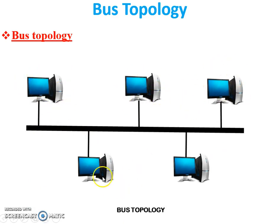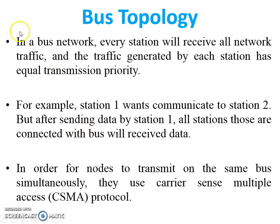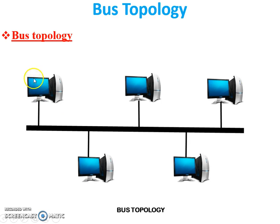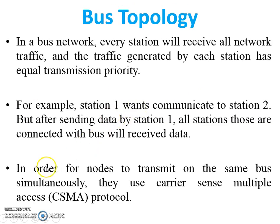Here you can see the structure of bus topology: Station 1, Station 2, Station 3, Station 4, and Station 5 — all stations are connected to the backbone cable. In a bus network, every station will receive all network traffic, and the traffic generated by each station has equal transmission priority. For example, if Station 1 wants to send data to Station 2, all other stations connected to the bus will also receive that data.